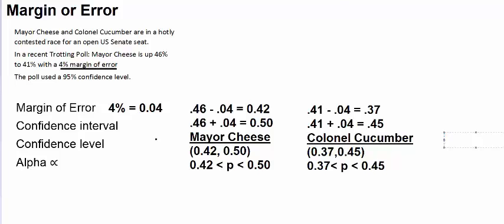Here's the big question: is there a clear leader? Do the confidence intervals overlap? The poll said that Mayor Cheese was up 46% to 41%. But what's within reason, what's possible, is that Mayor Cheese could be performing as poorly as 42%, and Colonel Cucumber could be performing as well as 45% with the electorate.